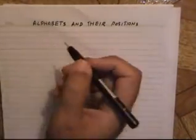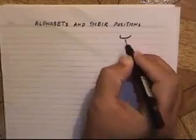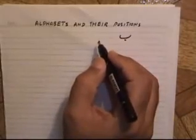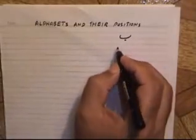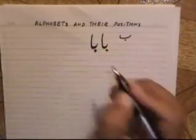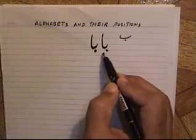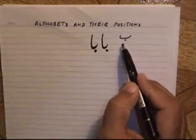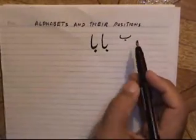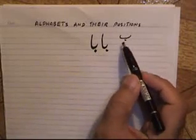In this lesson, we are going to discuss the alphabets and their positions. If you see Be and there is a word Baba, normally we use it for father. If I write Baba in Urdu, it will be like this. This part of Ba where we are using Be is quite different than the original shape of Be. We have to understand that when we are using alphabets in any word, how many positions these alphabets can take.